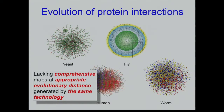The problem is none of these networks are whole proteome scale — not all proteins have even been tested. And our technology has a huge false negative issue: we don't detect many interactions. Also, these species are 1.5 billion years and above apart, so you really need comprehensive maps at appropriate evolutionary distances, generated by the same technology.